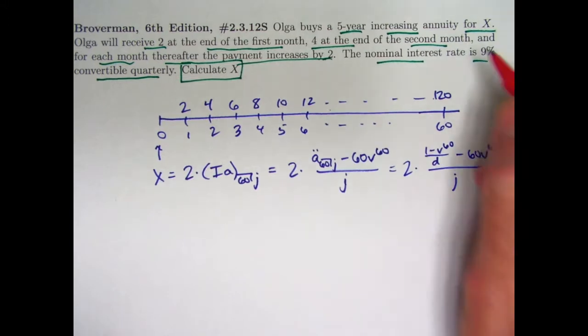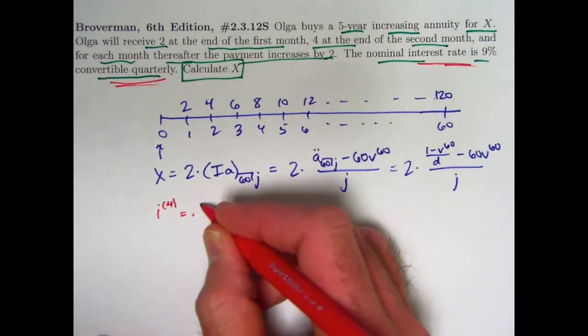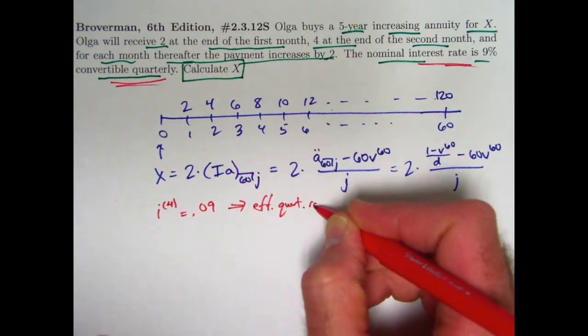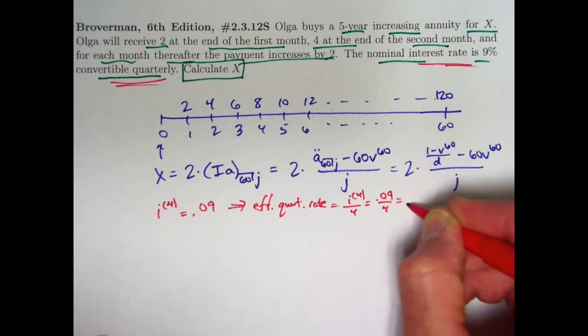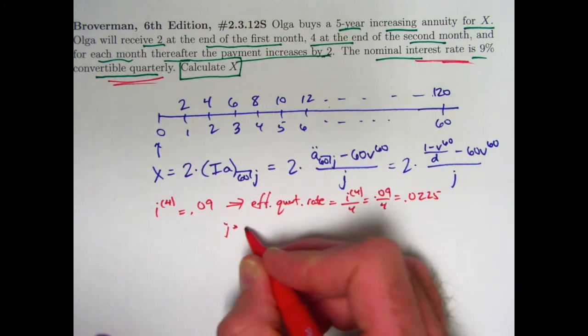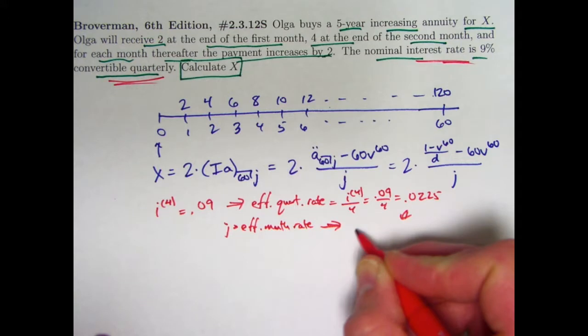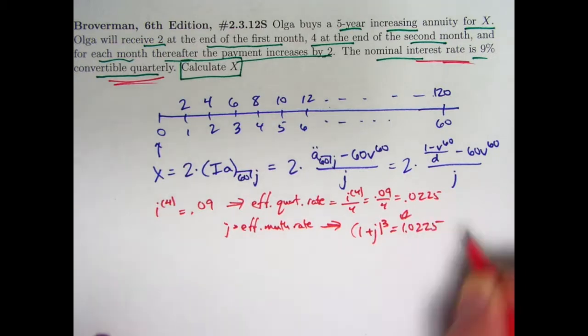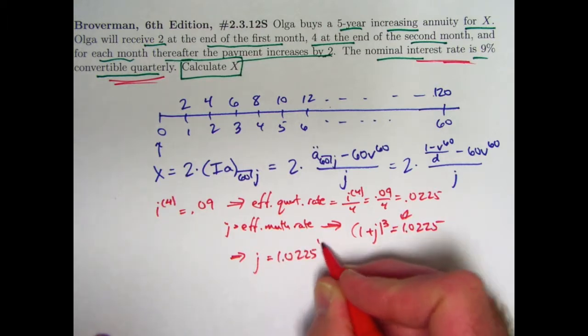Here is ultimately the formula we're going to use. This nominal interest rate is 9%. Symbolically, we would represent that by I4 because it's convertible quarterly. I4 is 0.09, which means the effective quarterly rate would be that number divided by 4. 0.09 divided by 4 is 0.0225. And if J is the effective monthly rate, 1 plus J quantity cubed will equal 1.0225. So J is going to be the cube root of 1.0225 minus 1.